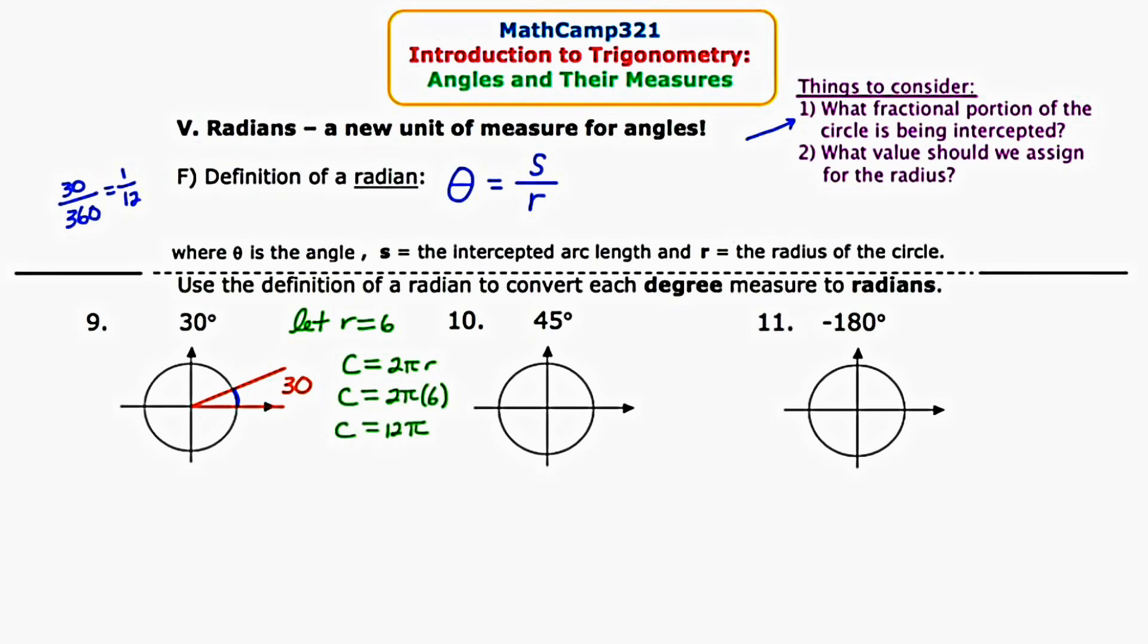We found the circumference of this circle to be 12π. Now I don't want to go all the way around. I just want to go 1/12 of the way around. So S, my arc length, is going to be 1/12 of the full circumference, or 1/12 of 12π, which leaves us with π. We know that this 30 degree angle can be converted into radians if I find the ratio of S, which is π, divided by the radius, which is 6. So the conclusion is that 30 degrees is equal to π/6 radians.